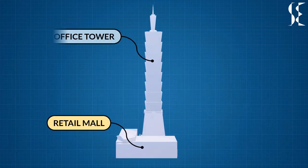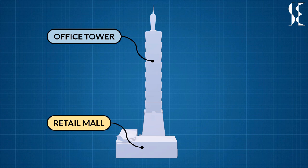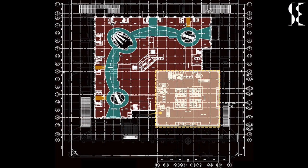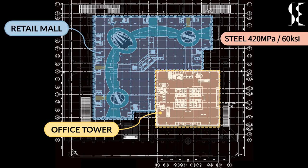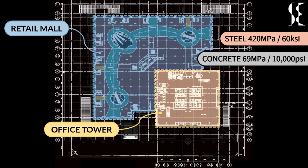The project consisted of a 5-storied retail mall and a 101-storied office tower. If we see the site in plan, the yellow portion is for the tower and blue is for the retail mall. 80% of the steel used in the building is of 420 MPa strength or 60 KSI while concrete used is of 70 MPa strength or 10,000 PSI.